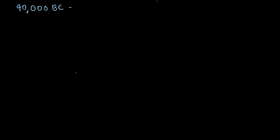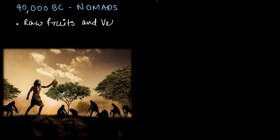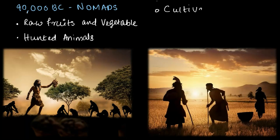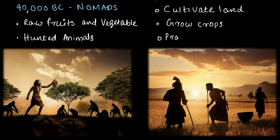Let's take a quick trip back in time, around 90,000 BC, where humans lived as nomads, moving from one place to another in search of food. Back then, they ate raw fruits and vegetables and hunted animals to survive. But as humans evolved, they learned to cultivate land, grow crops like wheat and rice, and began practicing agriculture.